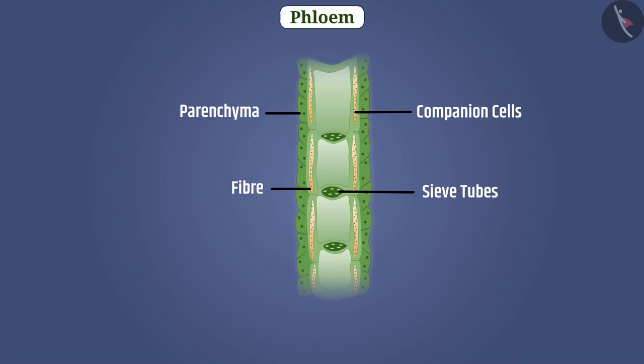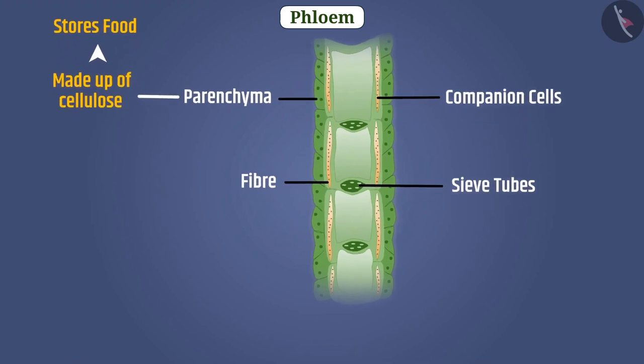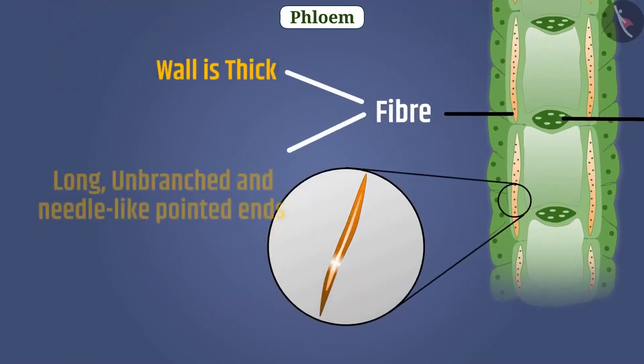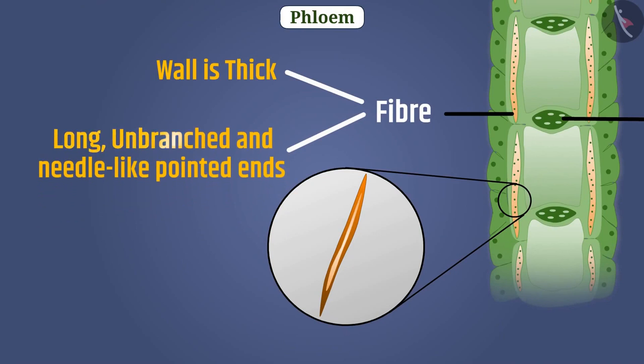The wall of phloem parenchyma is made up of cellulose that stores food. The wall of phloem fiber is thick. They are long, unbranched, and have needle-like pointed ends. That's why these are also called bast fibers.